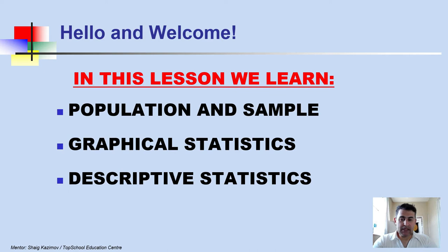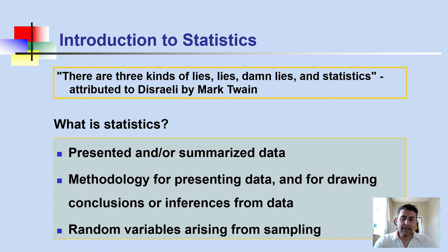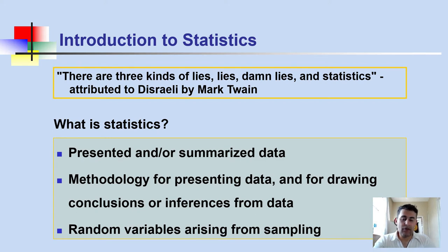Let's start with a little introduction to statistics, beginning with a quote from Mark Twain. He said there are three kinds of lies: lies, damned lies, and statistics. He thought statistics was the biggest lie because sometimes when we gather information about something, the data may not be appropriate and may not demonstrate the full truth.